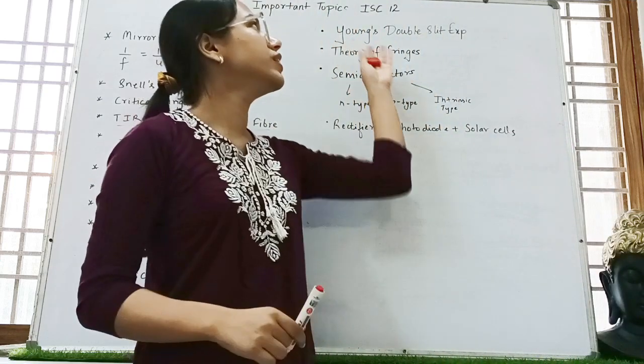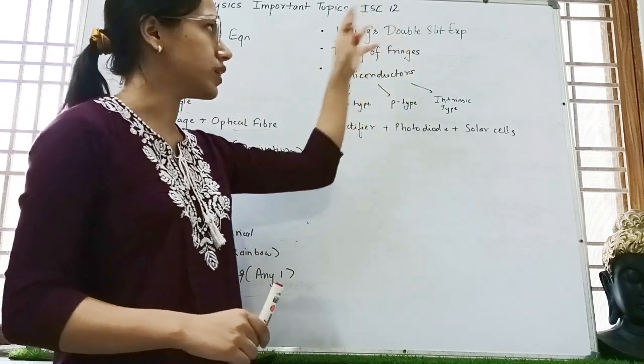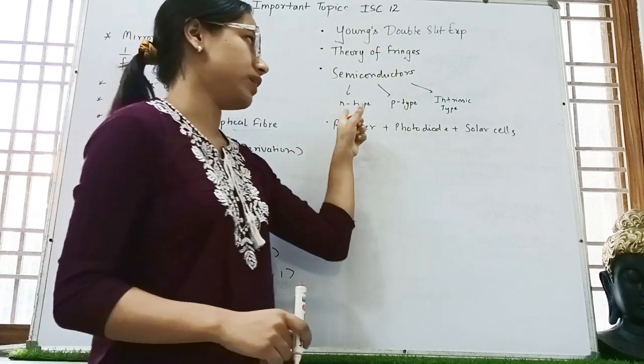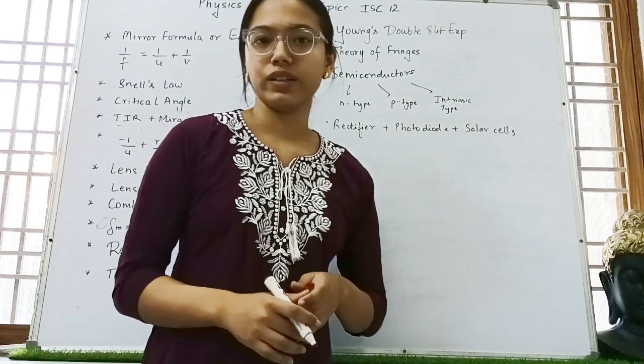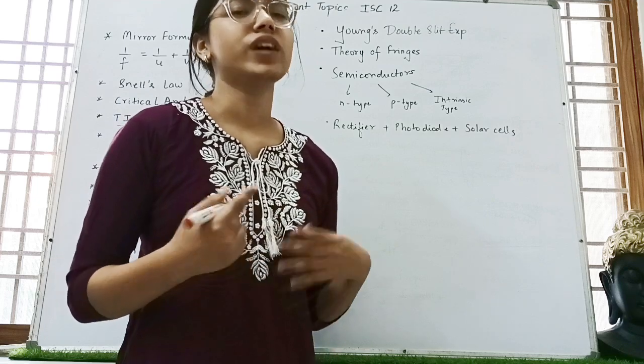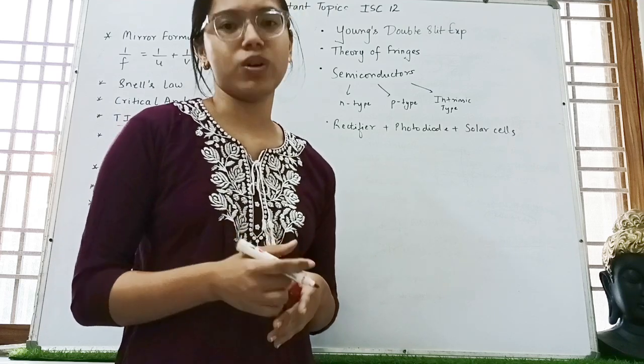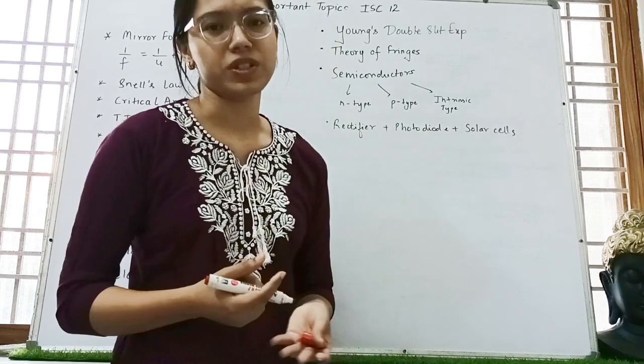Then we come to Young's double slit experiment. Then theory of fringes. The derivation. Semiconductors. N type P type, intrinsic type. See, the chapters that are at the end are to be studied like normally. You don't have to be very thorough. But since these are very short chapters, you can do them. I don't think I'll have to figure out what question is important.